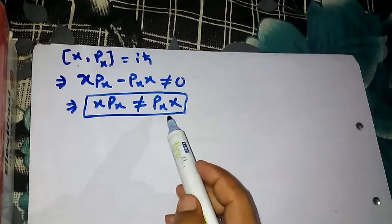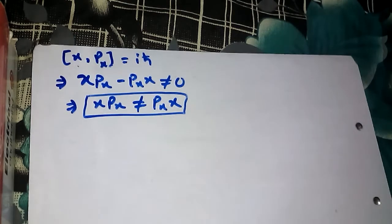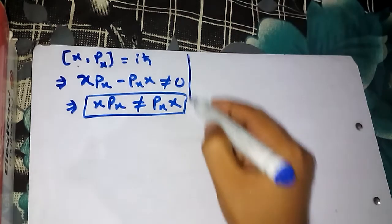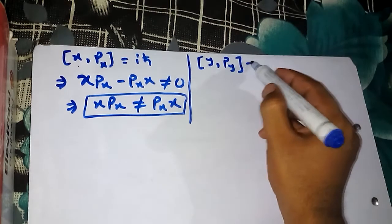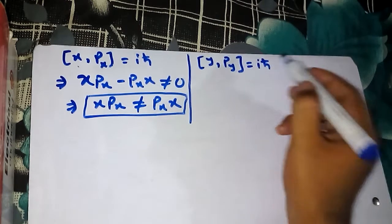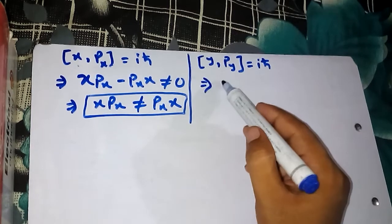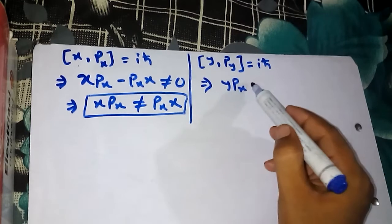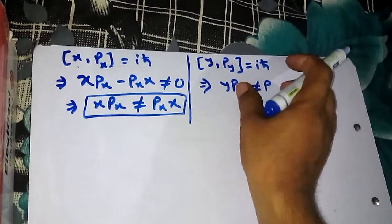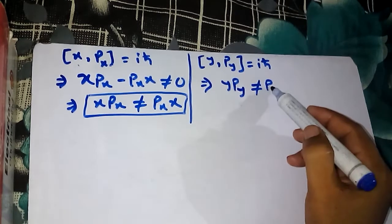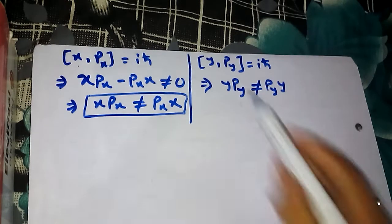Order matters here because X and P do not commute. Similarly, if you have the Y component of position and the Y component of momentum, we know this is again iħ, a nonzero value. That means they do not commute with each other, and again we can infer that YPy cannot be written as PyY.